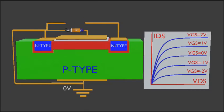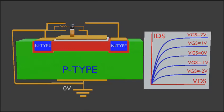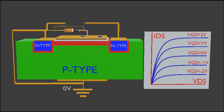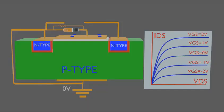If we remove the drain voltage, the channel restores its normal width. Applying a positive voltage at the gate attracts more electrons into the channel, so the channel width increases. If we first discharge the gate through a resistor — restoring the channel to its original state — and then apply a negative voltage at the gate, the negative charges repel electrons from the channel. The electrons start leaving the channel, the channel width decreases, and finally the channel is depleted completely, as shown in the MOSFET structure.